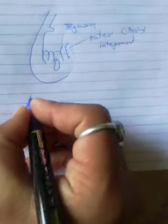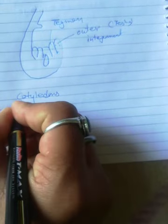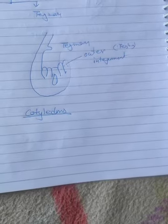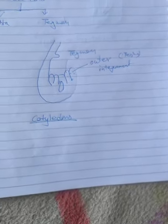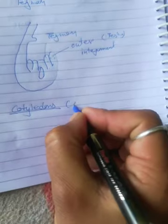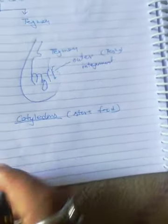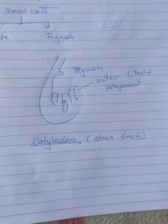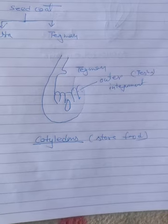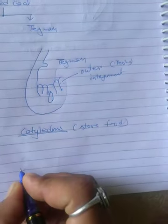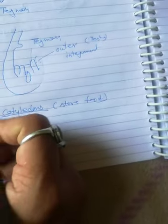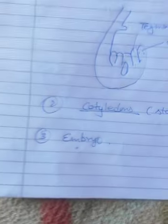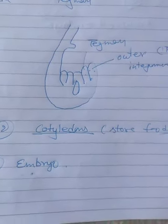Inside the seed are cotyledons. Cotyledons may be one or two: if one cotyledon is present, the plant is a monocotyledon; if two cotyledons are present, it is a dicotyledon. The role of cotyledons is to store food, which is used during seed germination to provide nourishment to the germinating seed. The three parts of a seed are: seed coat, cotyledon, and embryo. The embryo is enclosed in the seed and finally develops into a new plant.